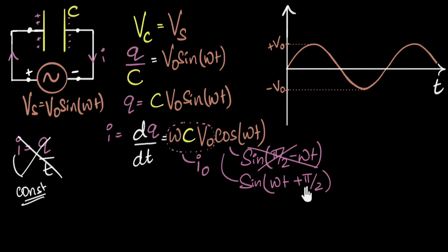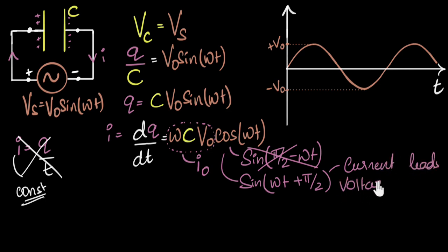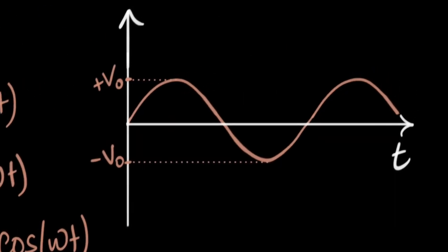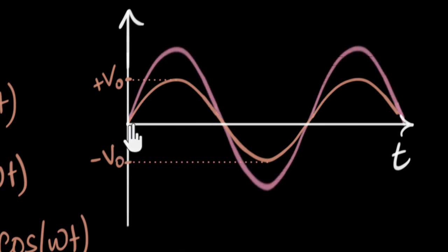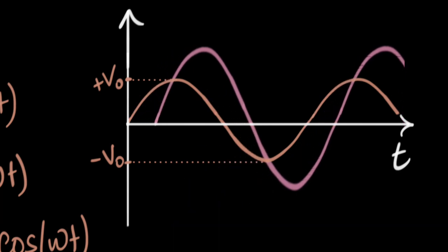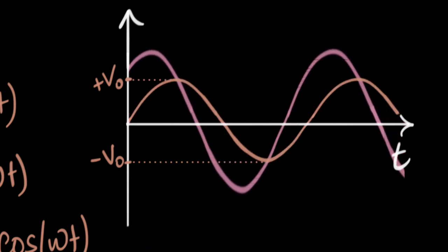That means the current is oscillating ahead with a phase angle of 90 degrees — it's oscillating a quarter cycle ahead of the voltage. And that's why we say in a capacitor, current leads the voltage. They're not oscillating in sync with each other. Current leads the voltage by a phase angle of π/2 radians. Now, if the current and voltage were in sync, the graph would look a certain way. But since the current is leading by π/2, pause the video and think: how would the current graph be shifted — to the left or to the right?